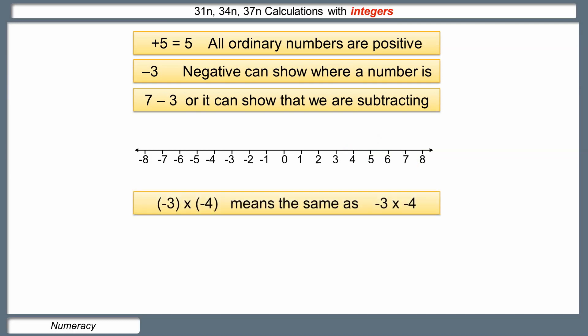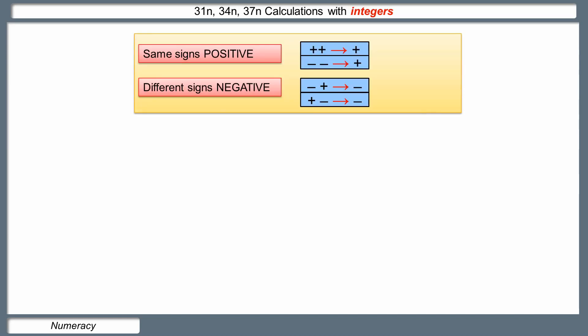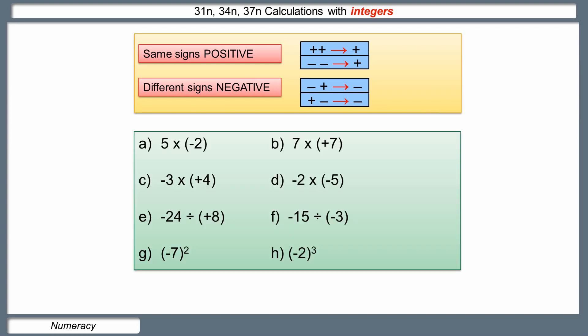If we look at things like negative three times negative four, they can be written in different ways — with brackets or without. These mean the same thing, but the brackets are put there to make clear it is a negative number times a negative number. If you're using your calculator, you should always put negative numbers into brackets. Working with our rules: if the signs are the same, it's a positive answer; if the signs are different, it's a negative answer.